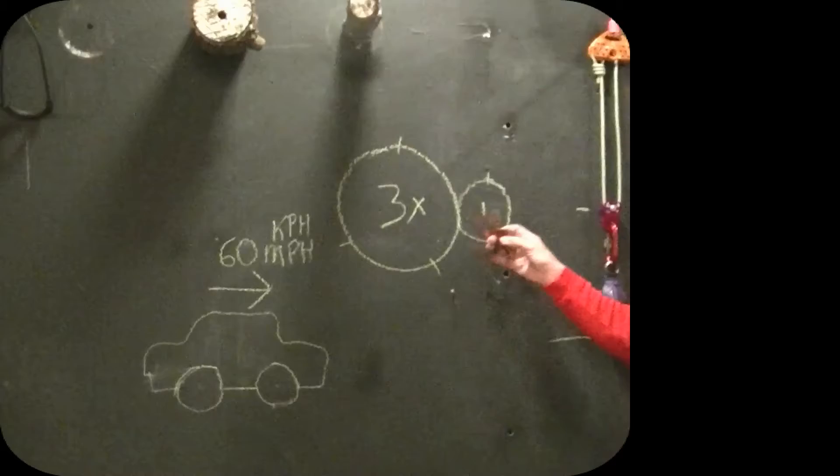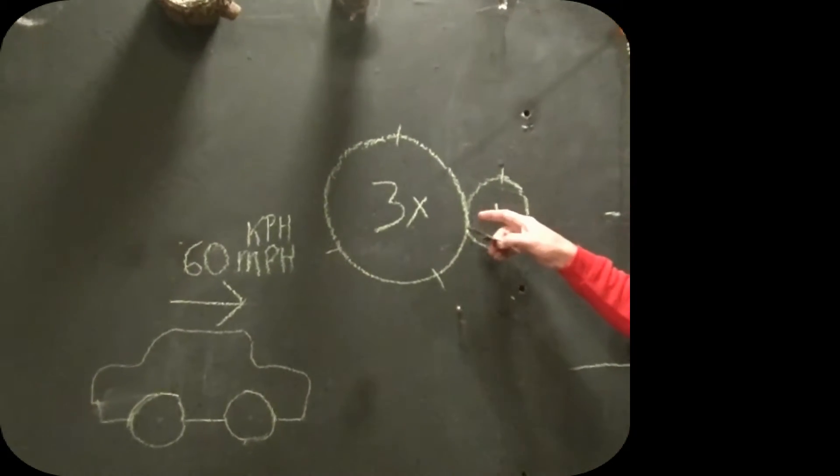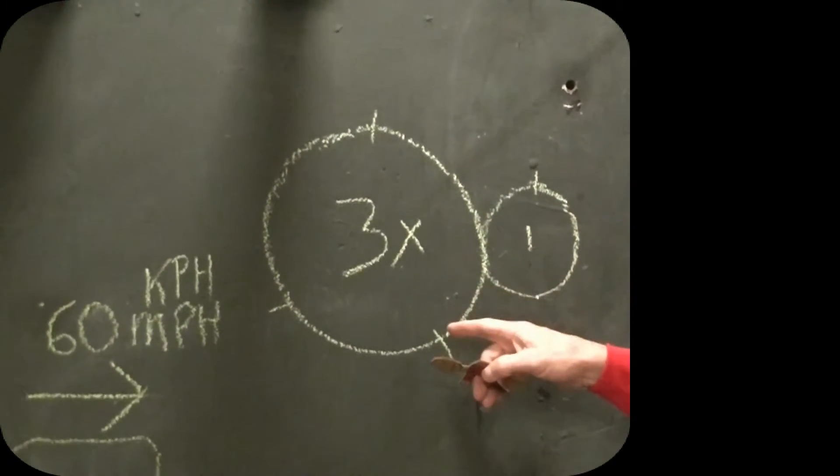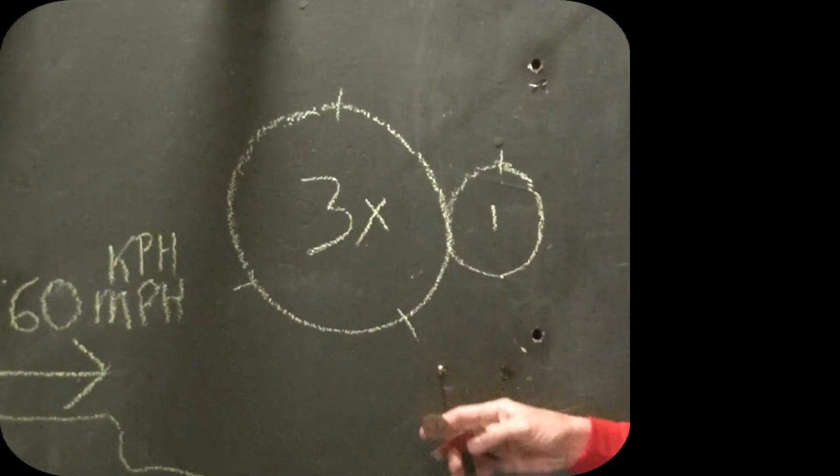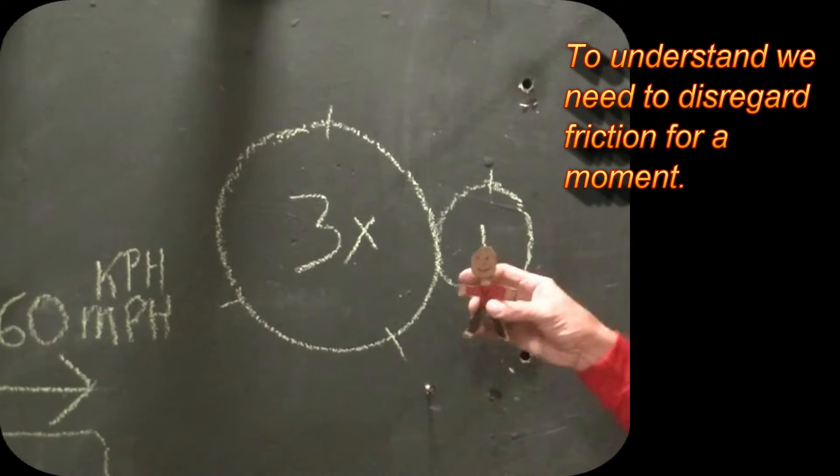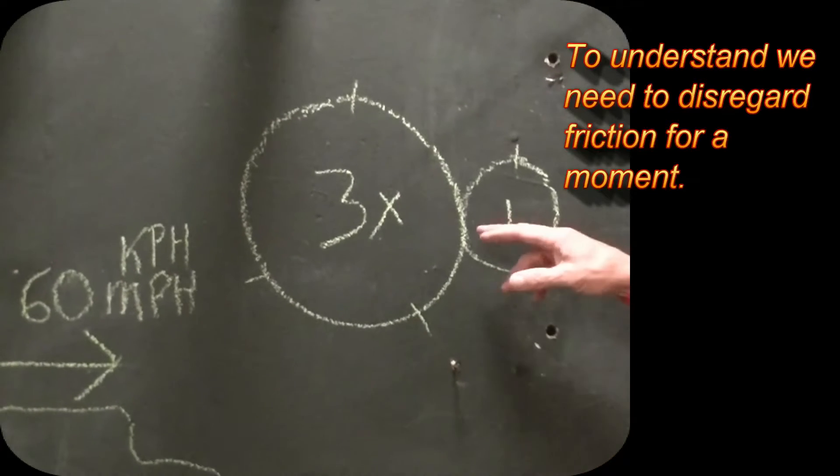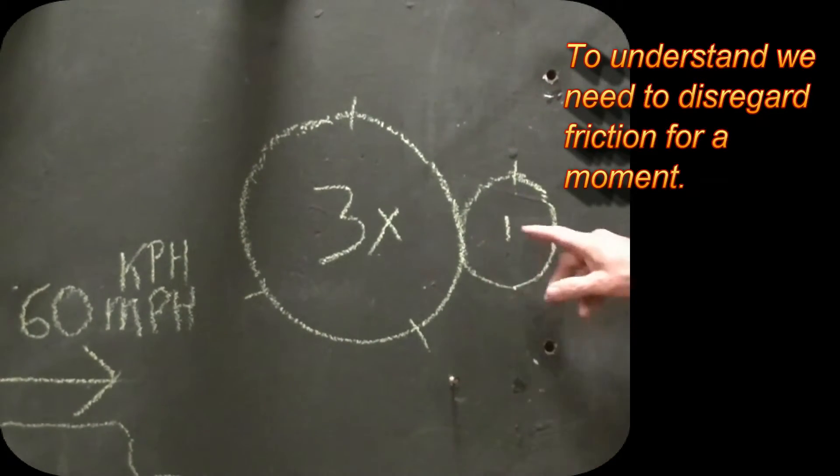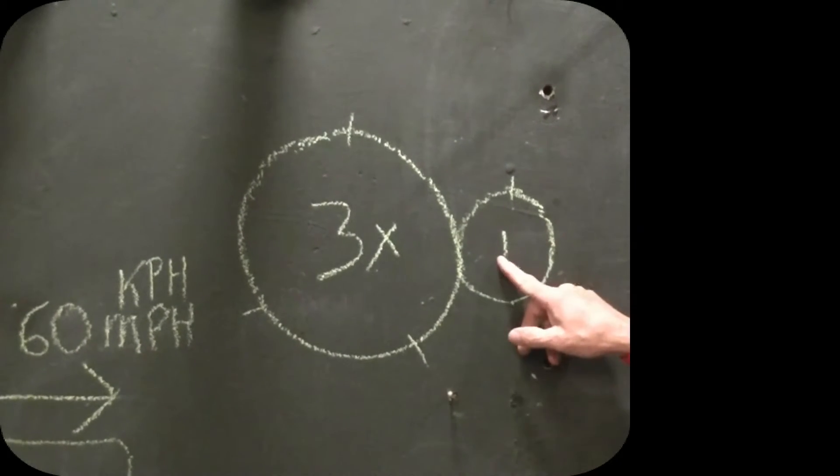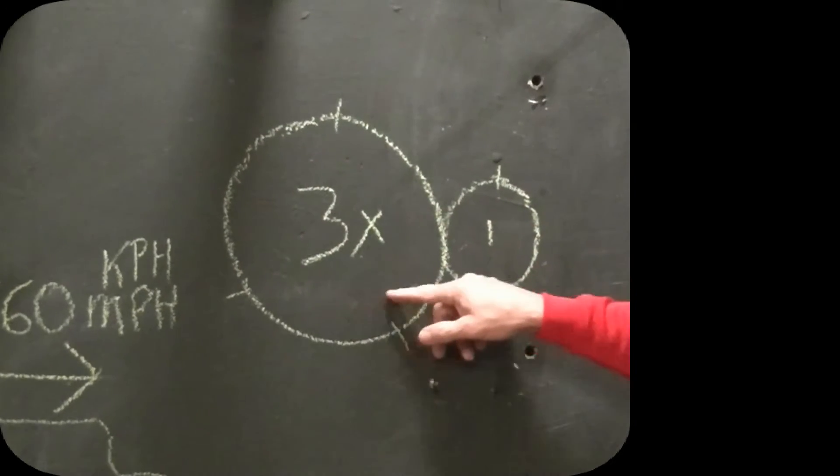I think we can all agree that when we're talking about mechanical advantage, we're talking about the relative motion of one object to another. We're not going to worry about forces or friction, we're going to take that all out. But I don't think anybody would disagree with me that if this is three times the size of this wheel, that if this wheel goes around three times, this one will turn around once.